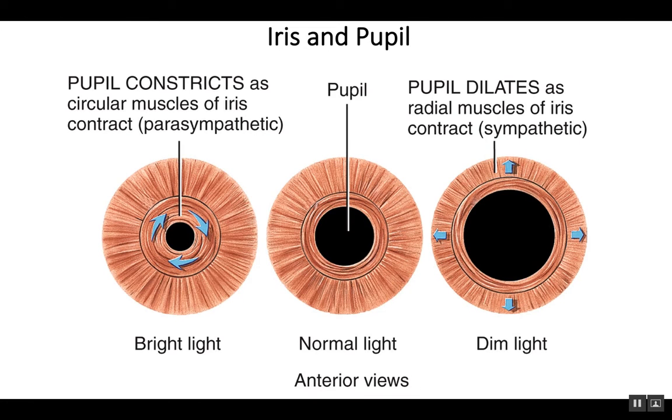Okay, let's revisit the iris a bit. These three drawings show the iris, an unpigmented iris. Remember, the iris is what often will give eyes different colors. But you'll notice this iris is doing different things in three different levels of light: normal light, bright light, and dim light.